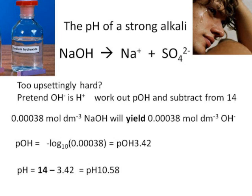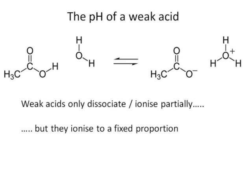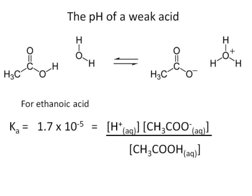So we've done strong acids and strong bases. Let's go and have a look at weak acids. That's where it starts getting a bit more complicated. The pH of a weak acid. A weak acid will only dissociate partially, or only ionize partially, but they ionize to a fixed proportion. We get a constant, we get a constant level of ratio of H pluses to concentration.